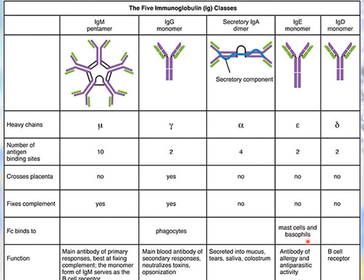In terms of function: IgM is mainly involved in complement fixation and serves as a B cell receptor, being the first antibody formed during infection. IgG is primarily involved in the secondary immune response and memory, helping neutralize toxins, participating in opsonization, and providing protection to the fetus. IgA provides protection in secretory materials such as tears, saliva, colostrum, milk, and mucus. IgE is involved in allergic and anti-parasitic activity. IgD functions mainly as a B cell receptor and is involved in activation of the B cell response.